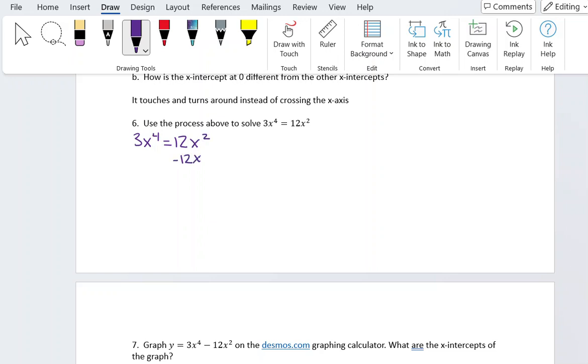So I'm going to minus 12x squared on both sides. That gives me 3x to the fourth minus 12x squared equals zero.